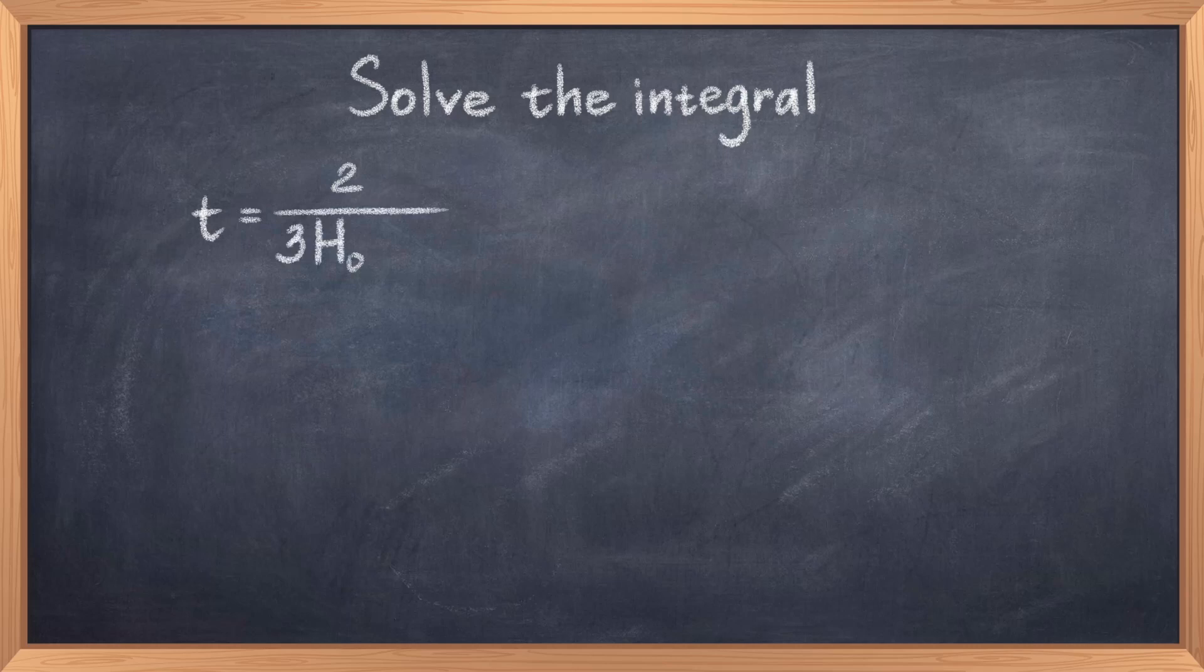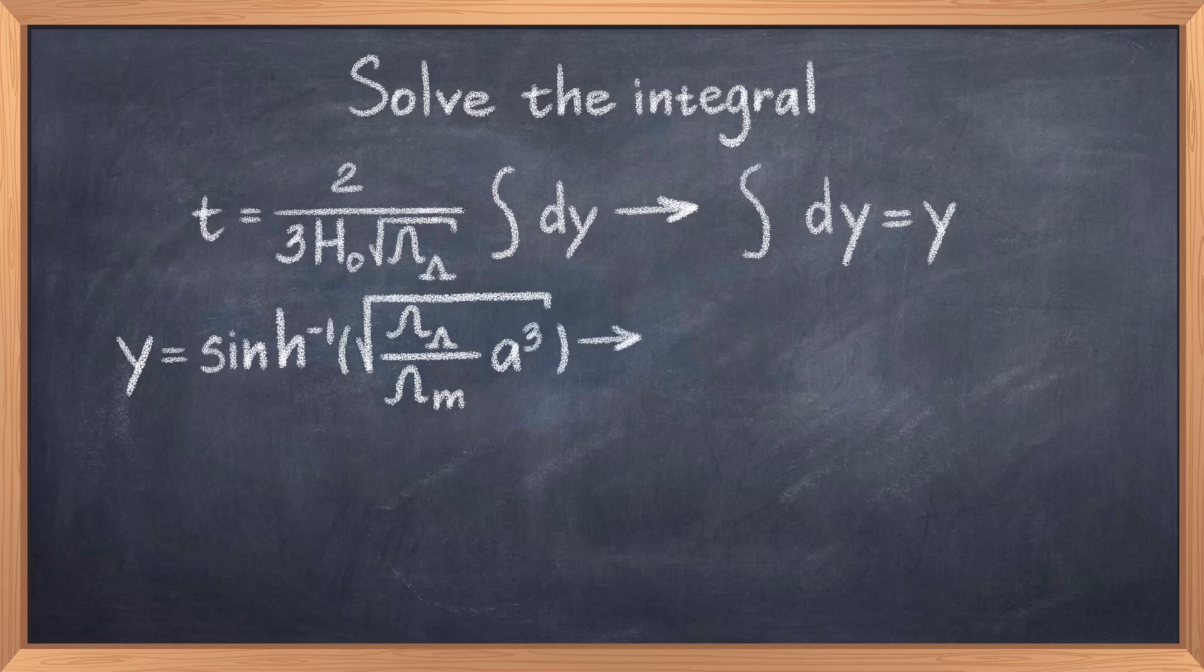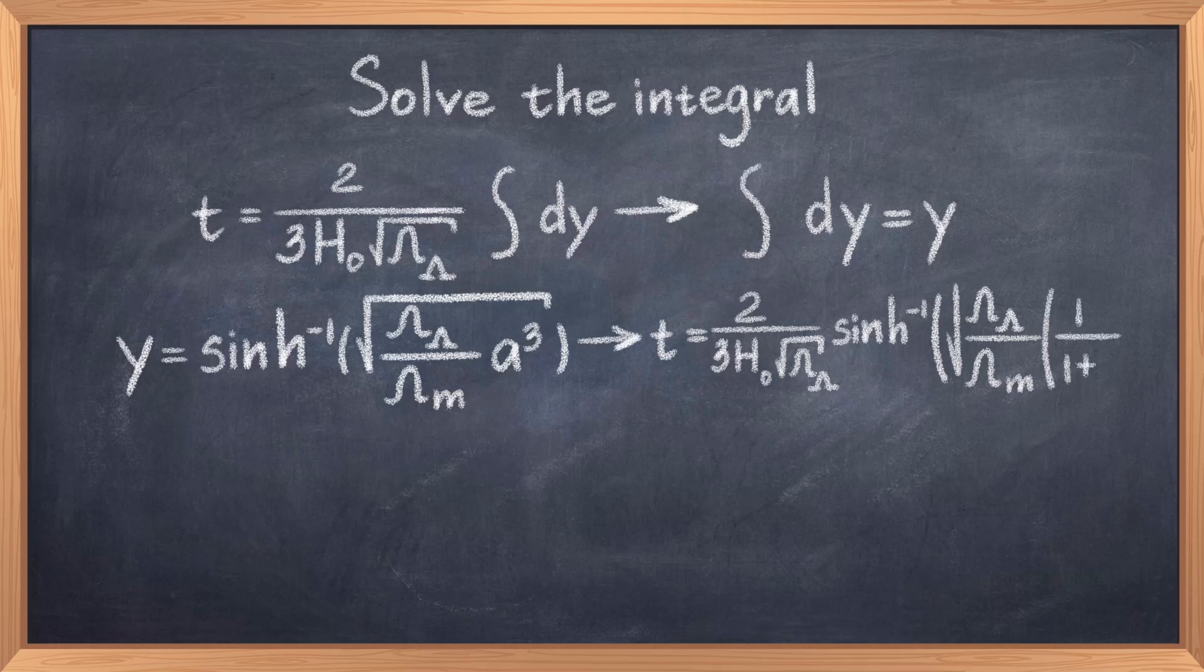t equals 2 over 3H₀√Ω_λ times the integral with respect to y, which we can easily integrate using that the integral of nothing with respect to y is just y. Then substitute in the definition of y, where y equals arcsinh of √(Ω_λ/Ω_m) times a³. This leaves us with the final equation after substituting the correct limits: t = (2/3H₀√Ω_λ) arcsinh[√(Ω_λ/Ω_m) × 1/(1+z)³]. This is our final result.